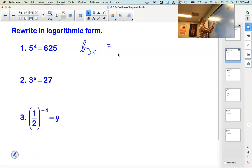So 625 goes in here. These are saying the same thing. 5 to the 4th is 625 is the same as the log base 5 of 625 equals 4.